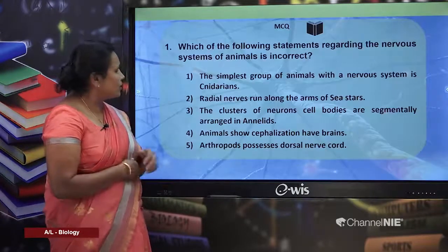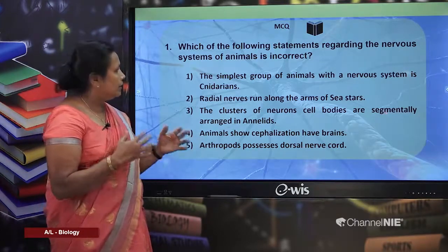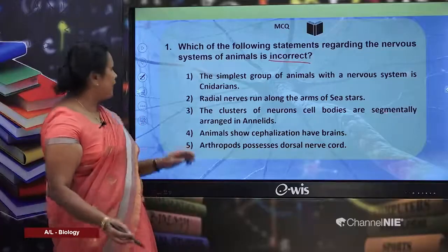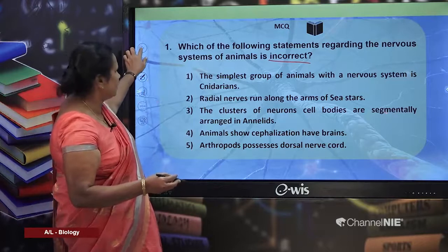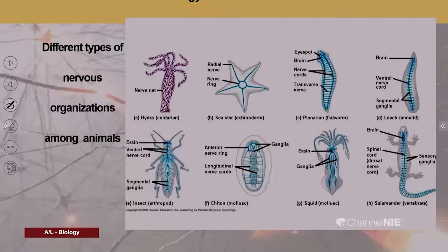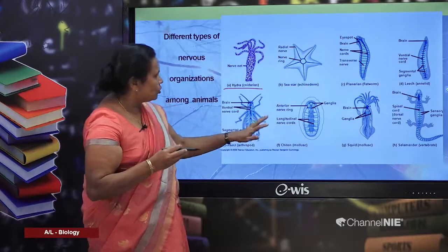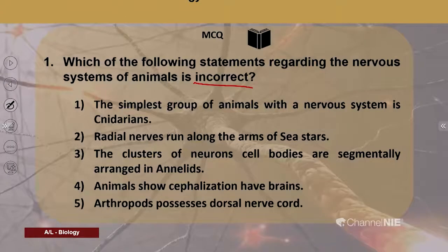Let's move to some questions. The following statement regarding the nervous system of animals is incorrect — select which one. First option: the simplest group of animals with a nervous system is cnidarians. Looking back at the diagram, the simplest organization of nervous system belongs to hydra. As organisms become more complex, the organization also increases in complexity. This statement is therefore correct.